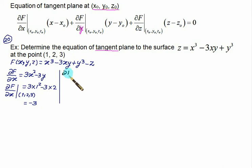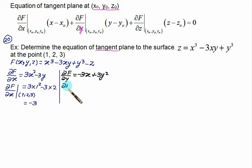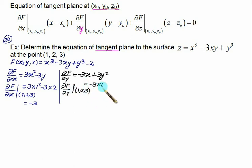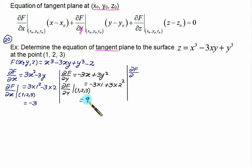Similarly, ∂F/∂y = −3x + 3y². Evaluate at (1, 2, 3) by putting x = 1 and y = 2: −3(1) + 3(2²) = −3 + 12 = 9. Then ∂F/∂z = −1, which is independent of x, y, z as it is a constant term.